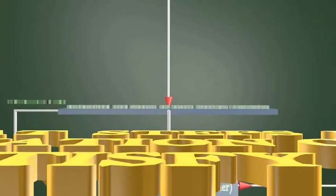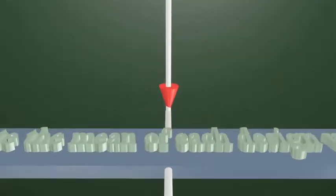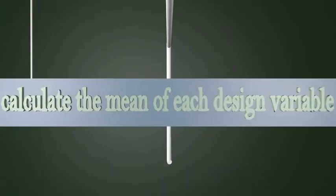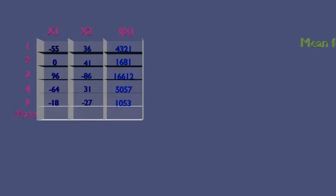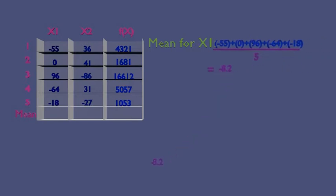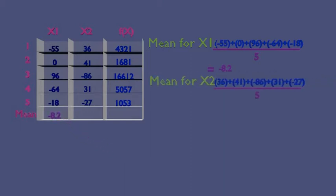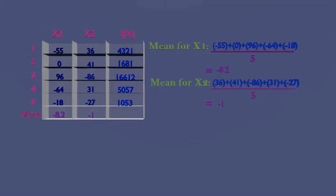Now we are moving to the second step: calculate the mean of each design variable. The task is calculating the mean of x1 and x2. Mean for x1 is calculated as the sum of all numbers in x1 divided by 5; the answer is minus 8.2 and gets updated in the column of x1. Mean for x2 is calculated in the same way and the answer, minus 1, also gets updated in the column of x2. This is our second step.